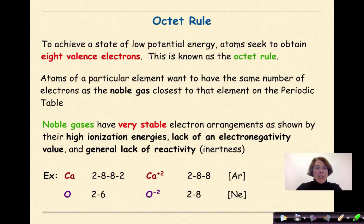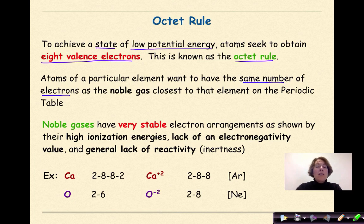Now let's talk about the octet rule. To achieve a state of low potential energy, where our molecules are much more stable, atoms seek to obtain eight valence electrons. This is known as the octet rule. Atoms of a particular element want to have the same number of electrons as the noble gas closest to that element on the periodic table.